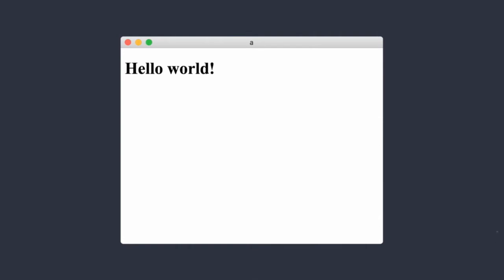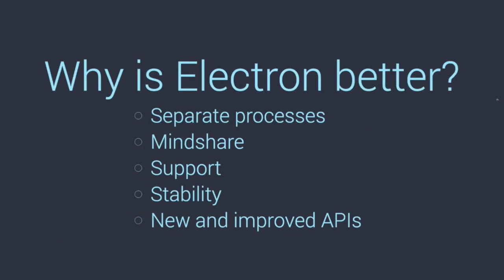Why is Electron more popular and why did it improve on the formula? One reason is that it's so popular there are loads of tools and open source projects out there. For example, if you want your app to remember the window size from last time it closed — that's on NPM, you just require it and call one method. Because it's also used in production by GitHub themselves with Atom, a lot of people point out bugs and support is really good.